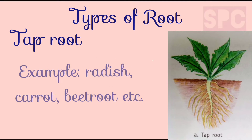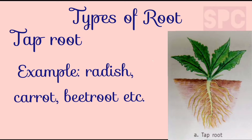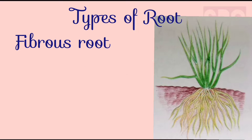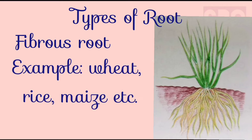Tap root is one main thick root that grows downward from the end of the stem and it has many small roots branching out of it. For example, radish, carrot, beetroot, etc. Whereas fibrous root is a cluster of many small, almost equal-sized roots growing from the base of the stem. They grow sideways in all directions and are bushy in appearance. For example, wheat, rice, maize, etc.